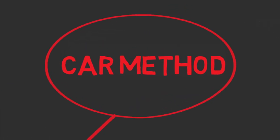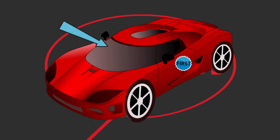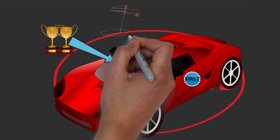First, the car method. In this method, you imagine going through your car and seeing events or objects in a particular sequence that represent what you need to memorize.